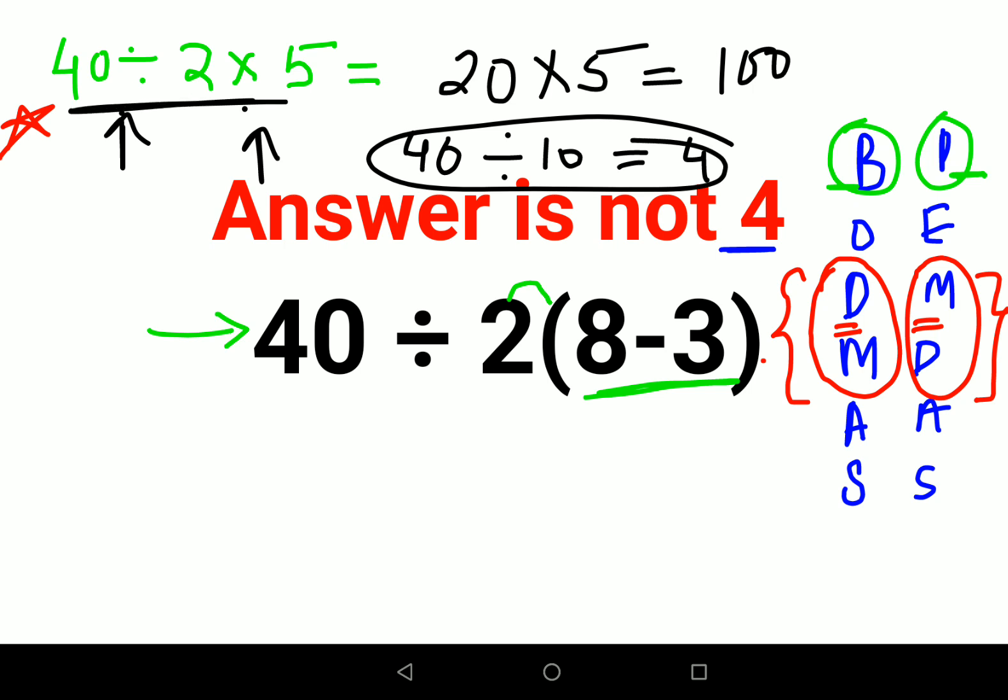Please understand, when you have just division and multiplication, in that kind of scenario you will go from left to right, means first you will do whatever operation comes first from your left hand side. So in this case I can very well say that 40 divided by 2 is coming first, so this comes out to be 20, into 5 will come later.